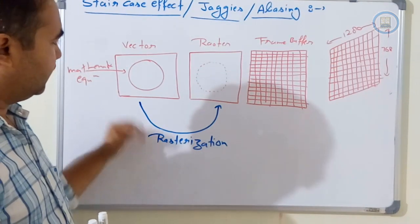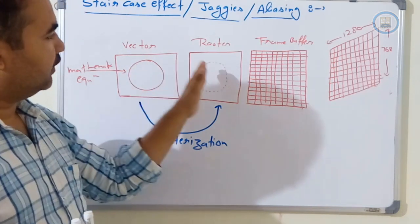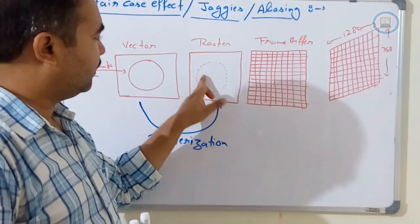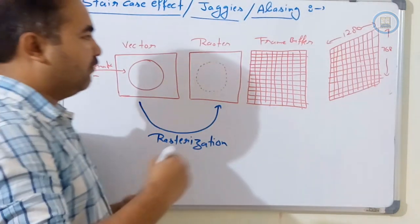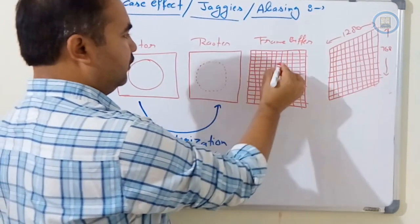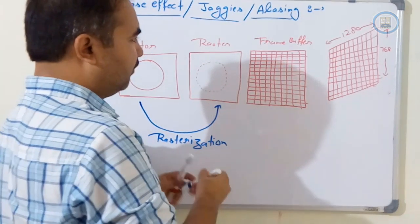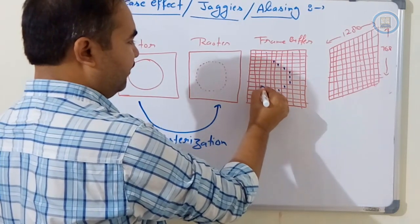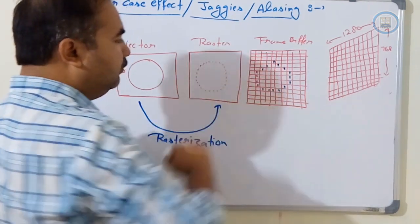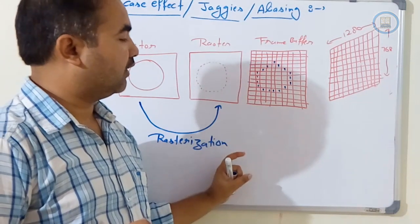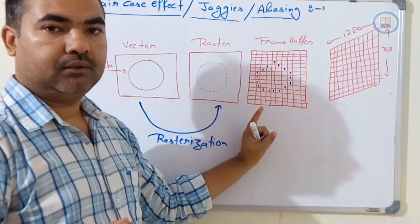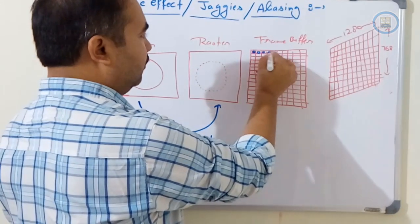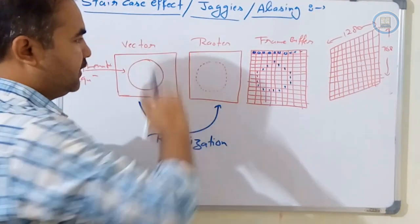This conversion process is called rasterization — scanning the vector image to produce raster image pixel information. After converting, the pixels we want to glow are stored as ones in the frame buffer. The complete screen is treated as one image, with the remaining pixel positions filled with zeros.